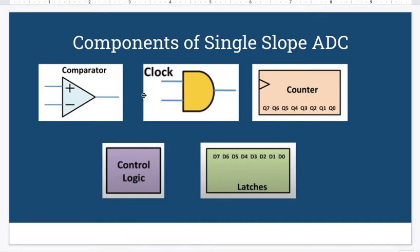Now here we have the components of single slope ADCs. Let's discuss the internal architecture of the single slope ADC. It has five important components. The first block is the operational amplifier used as the comparator. The function of this comparator is to compare the voltages applied at the inverting and non-inverting inputs of the operational amplifier.